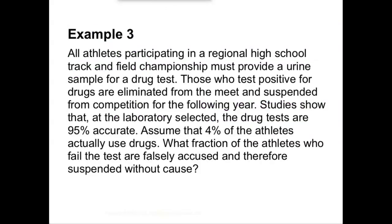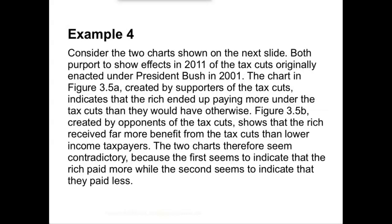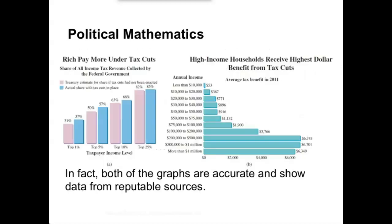The last thing, this isn't really an example that you have to write down, but it's just an example of how statistics can be misleading. Consider the two charts shown on the next slide. Both purport to show the effects in 2011 of the tax cuts enacted under President Bush in 2001. The chart in figure 3.5a, created by supporters of the tax cuts, indicates that the rich ended up paying more under the tax cuts than they would have otherwise. Figure 3.5b, created by opponents of the tax cuts, shows that the rich received far more benefits from the tax cuts than lower income tax payers. They seem contradictory, but they're actually both accurate. This really gets at a famous Mark Twain quote, which is there are three types of lies: lies, damned lies, and statistics.